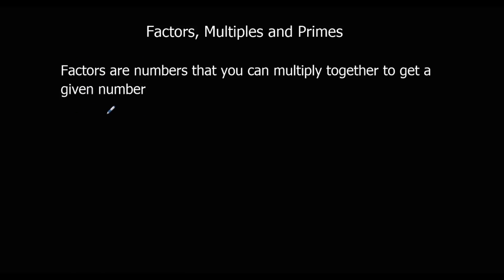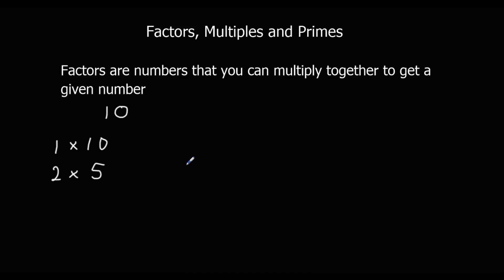So if I wanted the factors of 10, I want to know the numbers that multiply together to make 10. So I can get 10 by doing 1 times 10, or I could do 2 times 5. It's not in the 3 times table or the 4 times table, and I've already got 5. So the factors of 10 are 1, 2, 5 and 10 — the numbers that multiply to make 10.